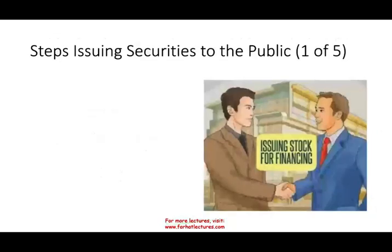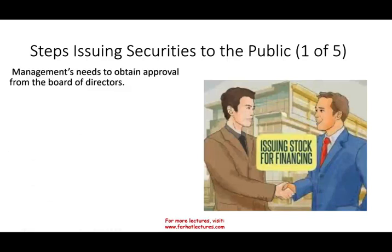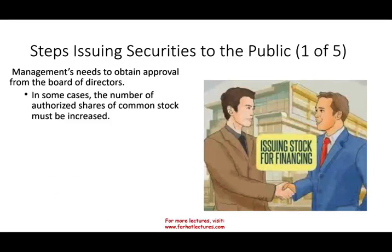What are the steps in issuing stocks to the public? We're going to summarize them into five steps. Step one: management will need to obtain board approval if they want to sell stock to the public. In most cases, the number of shares authorized must increase, which would require a shareholders vote. Because if you issue more stocks, existing stockholders' value might go down due to dilution. So step one is reaching agreement within the company that they want to sell stocks to the public.